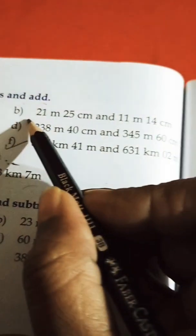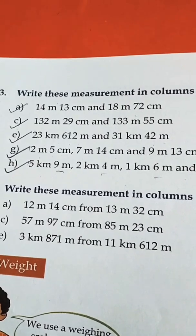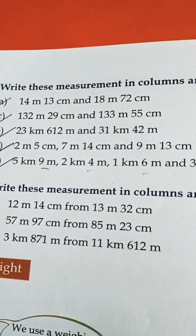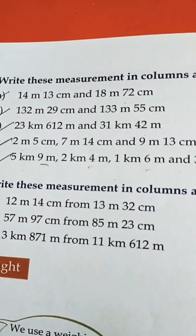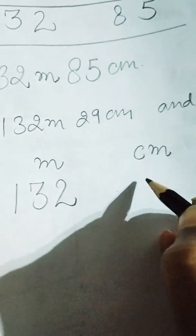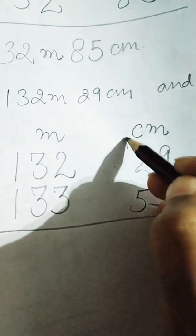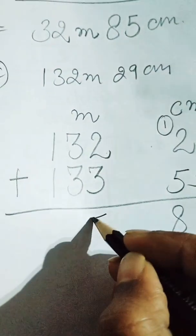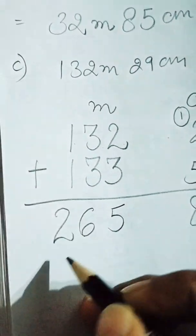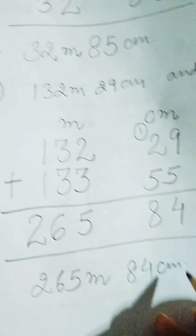In the same way you will do part b by yourself. Now I will tell you part c. The statement of part c is: 132 meter 29 centimeter and 133 meter 55 centimeter. We will write 133 meters and 55 centimeters, then add. 9 and 5 is 14, one carry; then 8; 3 plus 2 is 5; 3 and 3 is 6; 1 and 1 is 2. So here we got 265 meter 84 centimeter.